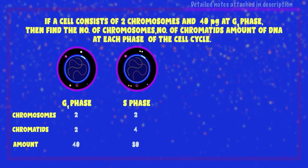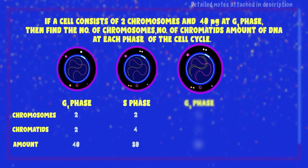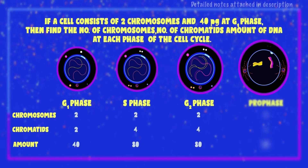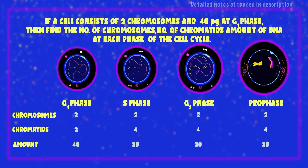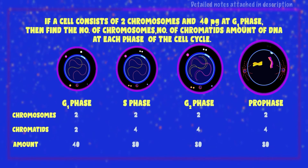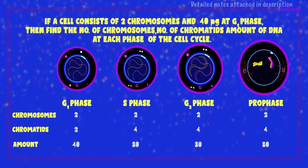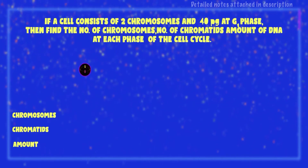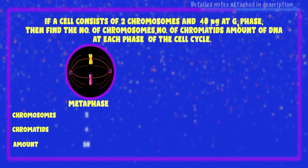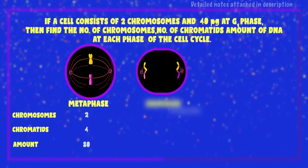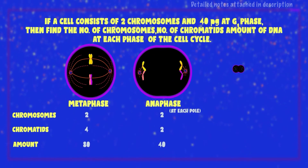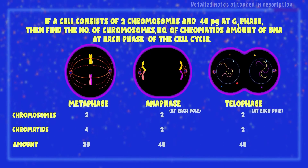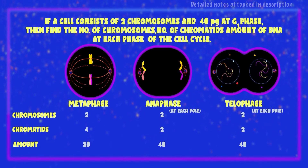The same numbers — 2 chromosomes, 4 chromatids, 80 picograms of DNA — are maintained during G2 phase, prophase, and metaphase. But during anaphase, since the centromere splits, the number of chromosomes, number of chromatids, and amount of DNA all become doubled at the cell level as chromatids separate, but half of the content moves to each pole. So at each pole: number of chromosomes becomes 2, number of chromatids becomes 2, and amount of DNA becomes 40 picograms. The same values are maintained in telophase.